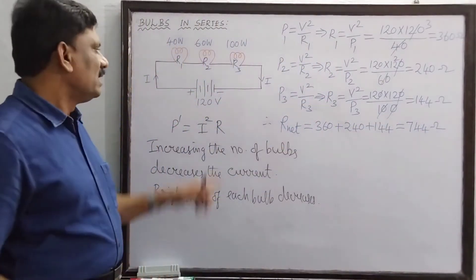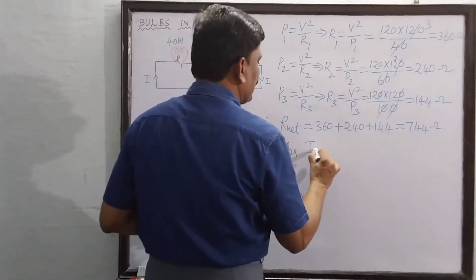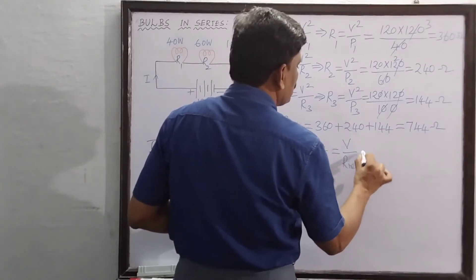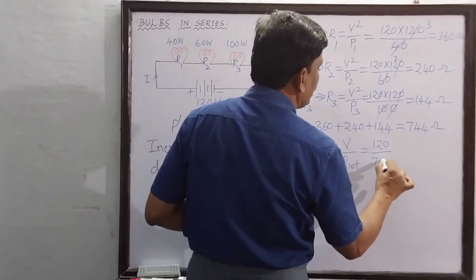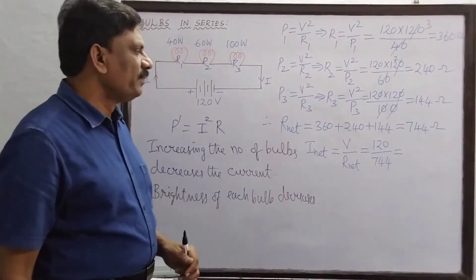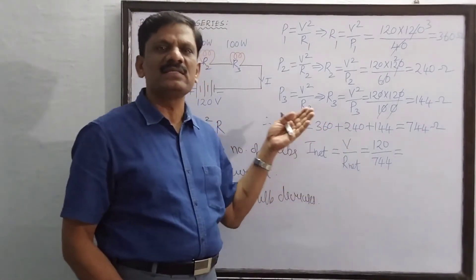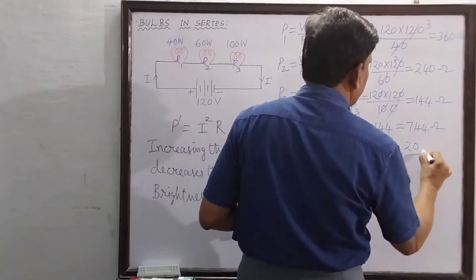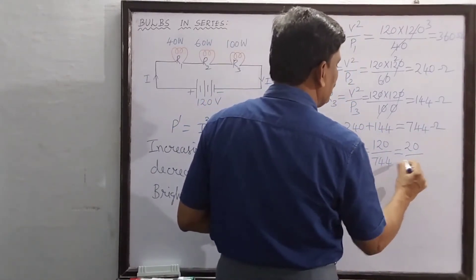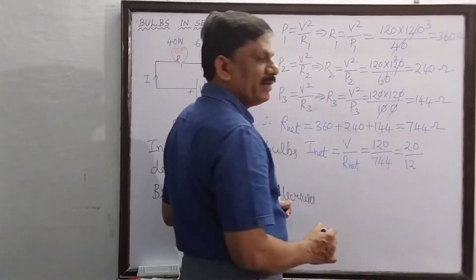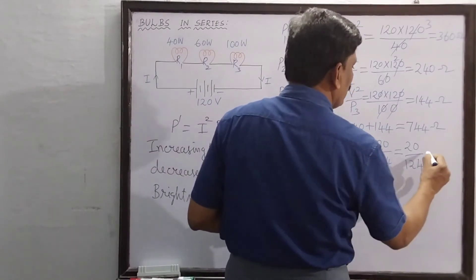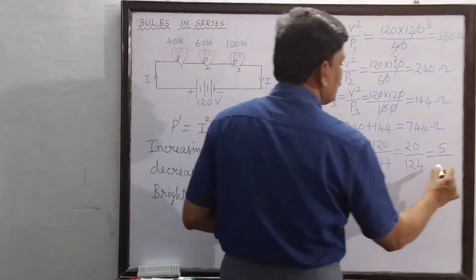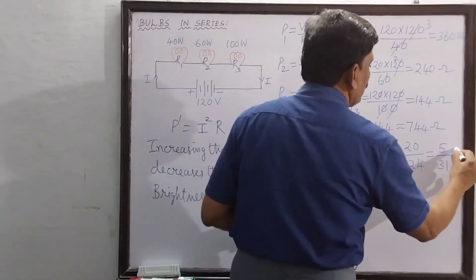The net voltage is 120 volts, so the net current in the circuit is I = V / R_net = 120 / 744. Simplifying by dividing both by 6 gives 20/124, and further dividing by 4 gives 5/31 amperes.